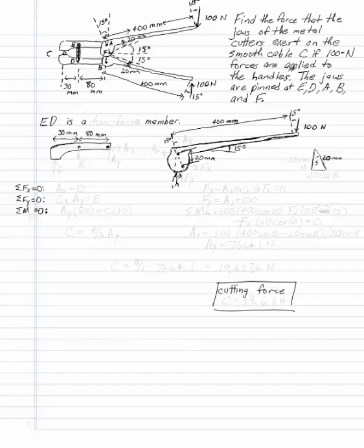Find the force that the jaws of the metal cutters exert on the smooth cable C if 100 newton forces are applied to the handles. And we're told that the jaws are pinned at E, D, A, B, and F.